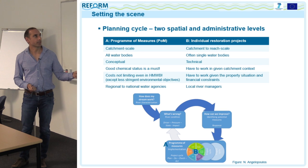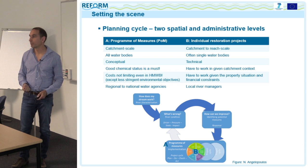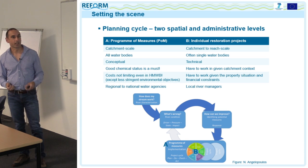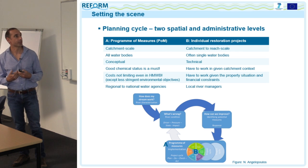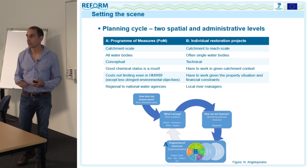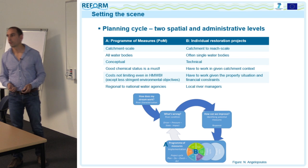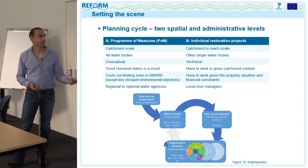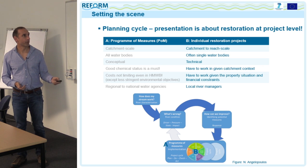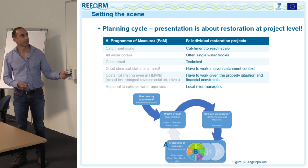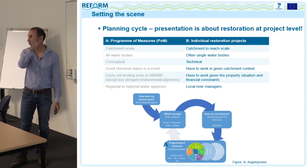The second level is that of individual restoration projects — the technical implementation of this conceptual program, often done at reach scale. These projects have to work within the given catchment context and property and financial constraints. This is usually done by local river managers. In this presentation, I will focus on this scale, partly because we mainly have information at this scale.